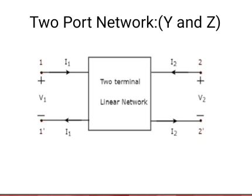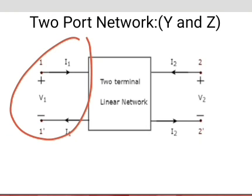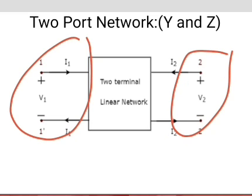For this, we can use two-port network representations. As the name suggests, two-port networks contain two ports, among which one port is used as the input port and the other port is used as the output port. Therefore, the first and second ports are called port 1 and port 2 respectively.